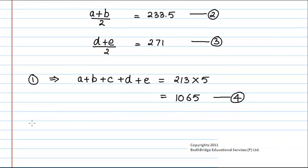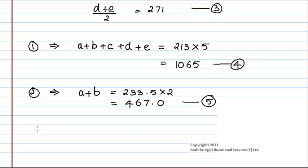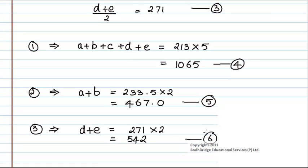From the second equation we can write A plus B is equal to 233.5 into 2, that is 467. Let us consider this as equation number 5. And from the third equation we can write D plus E is equal to 271 into 2, that is 542. This is equation number 6. So now we know A plus B and D plus E from equations 5 and 6.